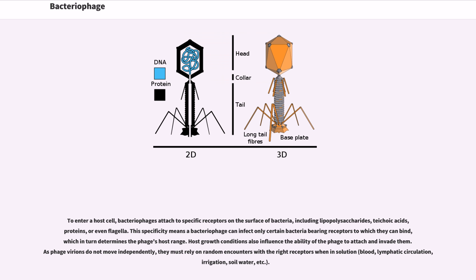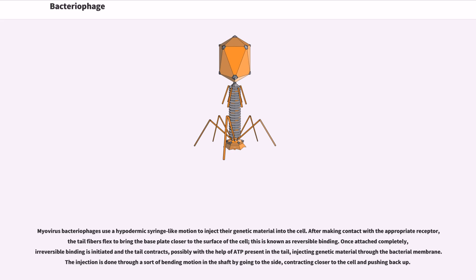This specificity means a bacteriophage can infect only certain bacteria bearing receptors to which they can bind, which in turn determines the phage's host range. Host growth conditions also influence the ability of the phage to attach and invade. As phage virions do not move independently, they must rely on random encounters with the right receptors when in solution — blood, lymphatic circulation, irrigation, soil water, etc.